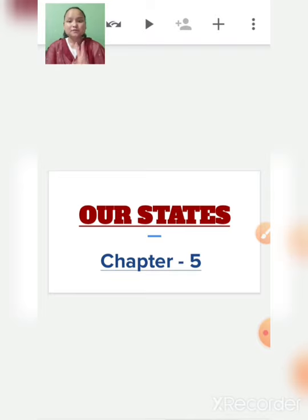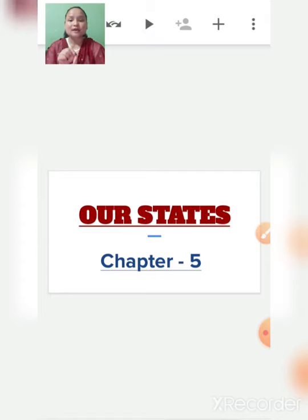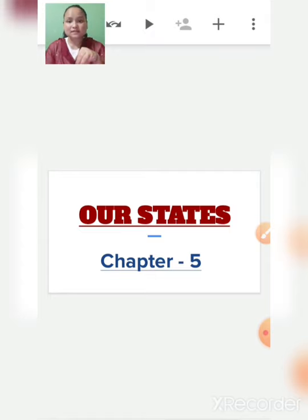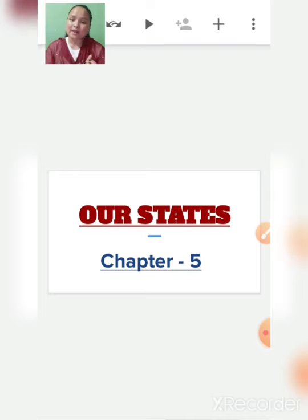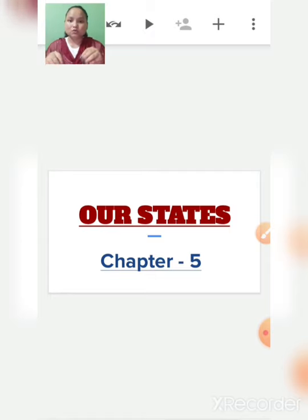There are two types of government: central government and state government. The central government is at the center, and it is not possible for the central government to look after all 28 states and eight union territories. So the central government gave some power to the state governments, and state governments look after their own states.